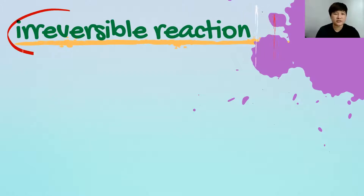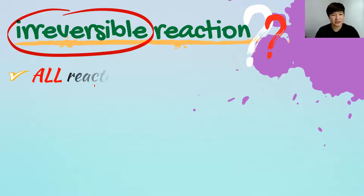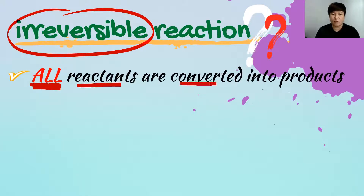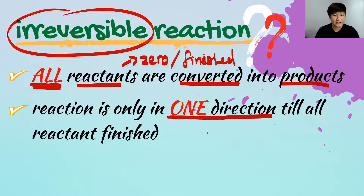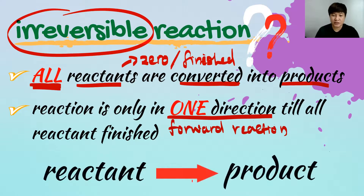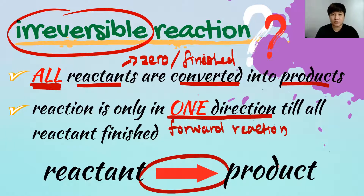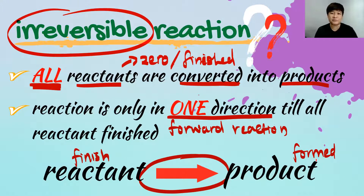Irreversible reaction means all the reactants are converted into product — your reactant at the end must be zero or finished. The reaction will only go in one direction, the forward reaction, until all the reactant is finished. The equation uses a single-headed arrow where all reactants must become products at the end of the reaction.